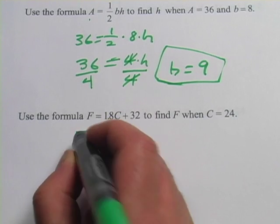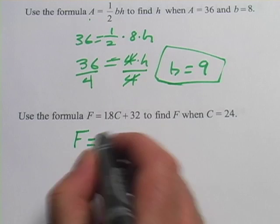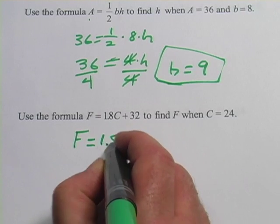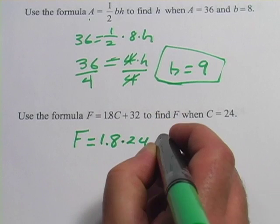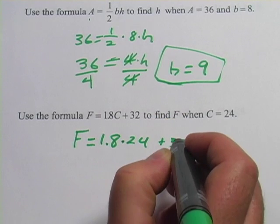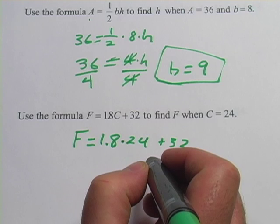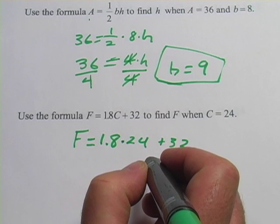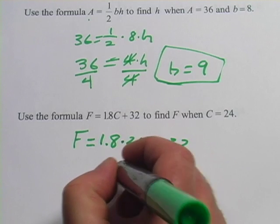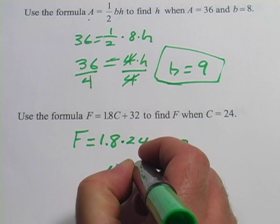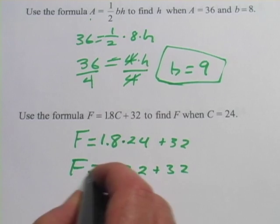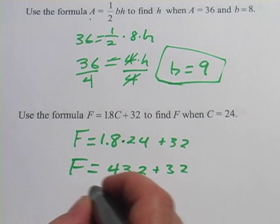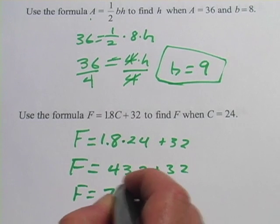So we don't know F, so we just keep that as a letter. Then we've got 1.8 times C. And C is 24, so this will be times 24 plus 32. So you might want to get out your calculator for this one. 1.8 times 24 is 43.2 plus 32. And that would be 75.2.